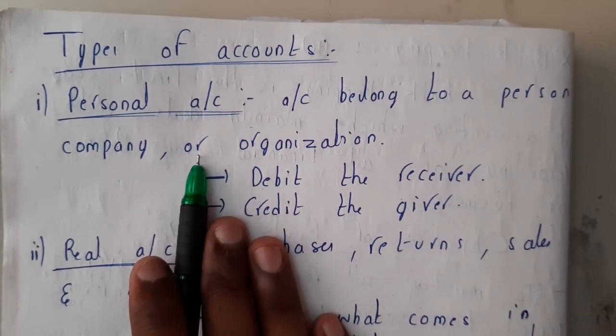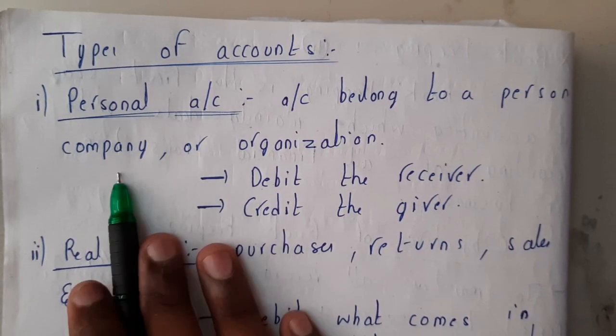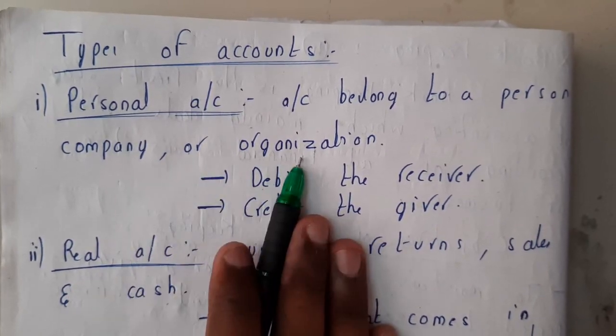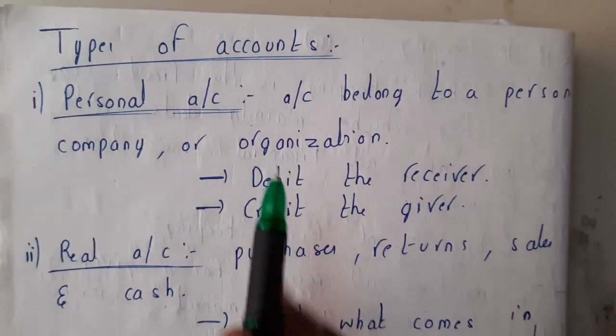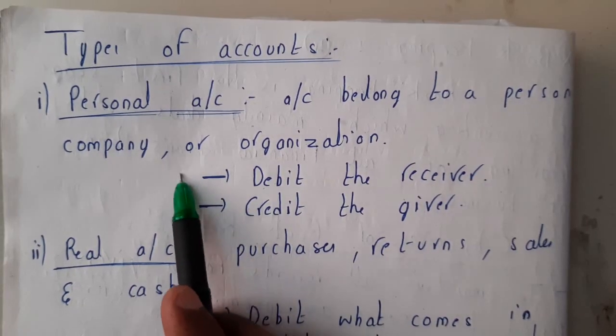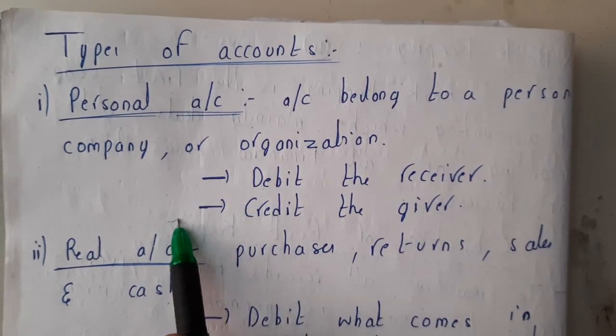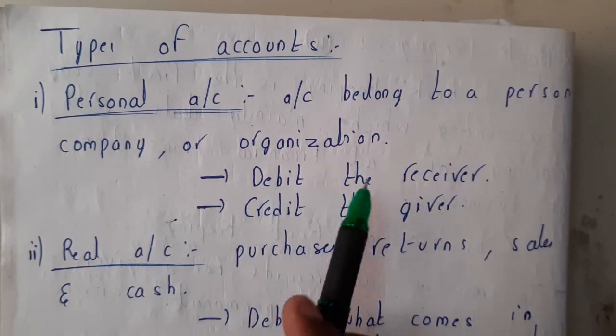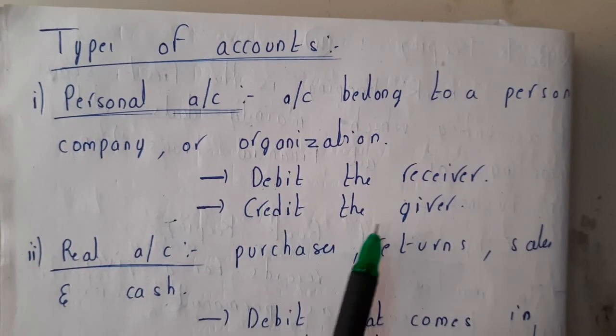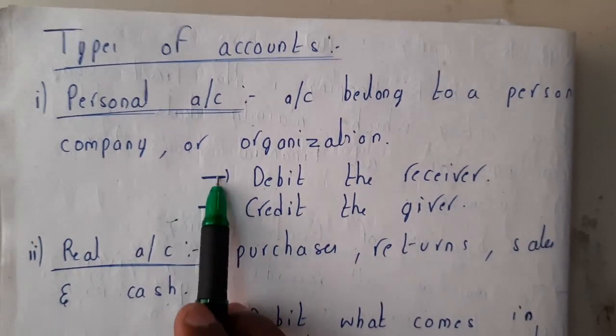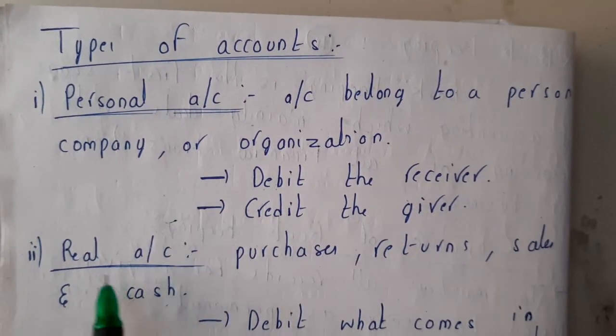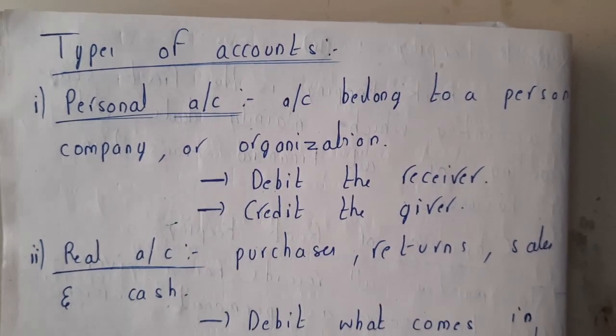The first type is the personal account. A personal account belongs to a person, a company, or an organization. The formula to remember here is: debit the receiver and credit the giver.